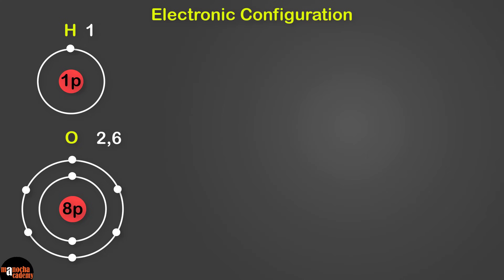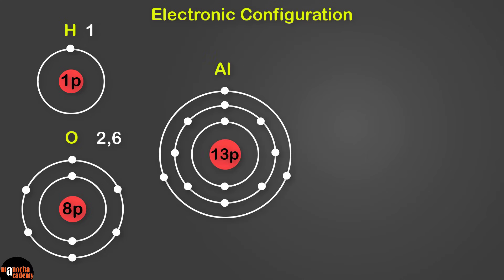Next, we have aluminium with atomic number 13. The electron configuration is going to be 2, 8, 3. So aluminium in the third period has 3 shells. You can draw the full electron configuration or write it in simple comma notation: 2, 8, 3.